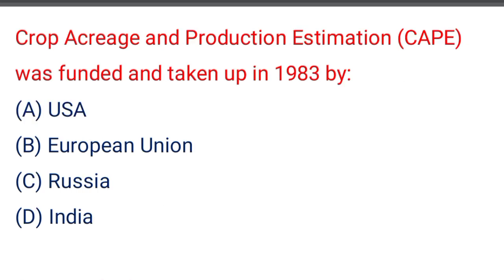Next question: crop acreage and production estimation was found and taken up in 1983 by — option A: USA, option B: European Union, option C: Russia, option D: India. The correct answer is option D: India.